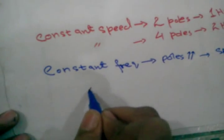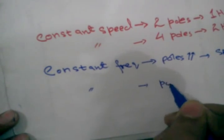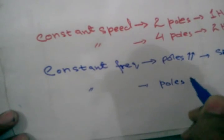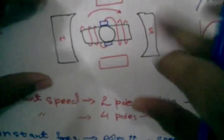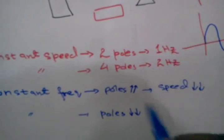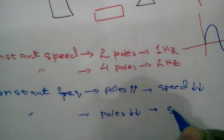And again, if we take the frequency constant, if we decrease the poles—suppose it has only two poles—then the speed will increase.